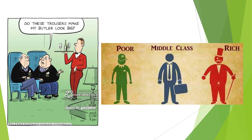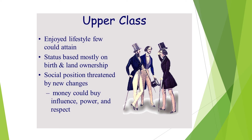Here are some cartoons about the iconography of class: the rich, the poor, the middle class, the upper class. Historically, during the industrial revolution of the late 1800s, the upper class enjoyed a lifestyle where status was based mostly on birth and land ownership — you were basically born right into it. But new changes meant money could buy influence, power, and respect.